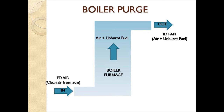The procedure of boiler purging is clearly shown in this picture. Clean air is provided by the forced draft fan, or secondary air fan, or FD air fan. This clean air is pumped into the boiler furnace. At the other end, the ID fan or induced draft fan creates a negative suction which pulls out this fresh air along with the unburned fuel and transports it to the stack or chimney. In this way, the unburned fuel is transported from the boiler furnace to the atmosphere.